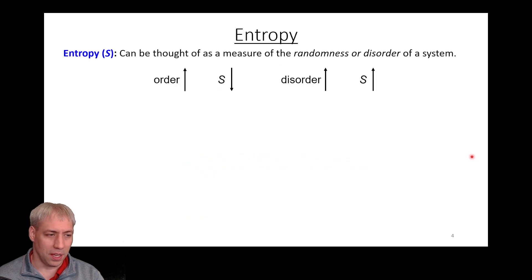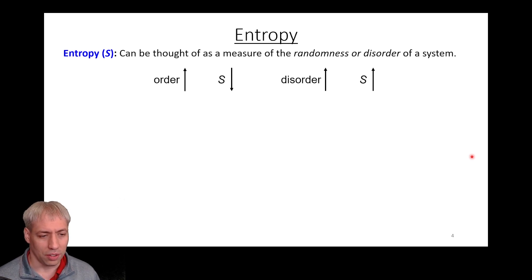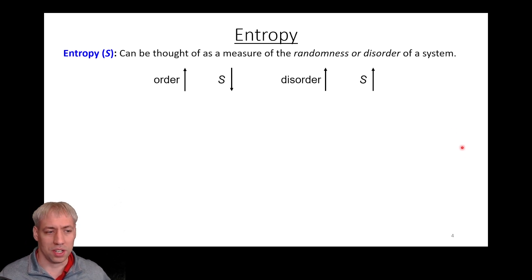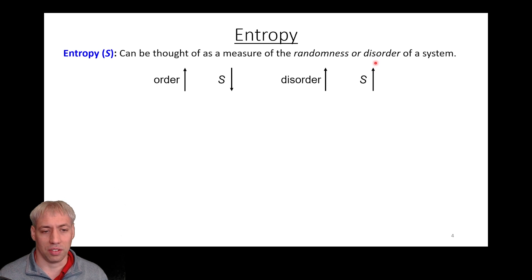In 16.2 we're going to talk about entropy. Entropy is a weird thing — there are many definitions to many different people. It's kind of hard to nail down a definition, but perhaps the easiest one to grasp intellectually is to think about it as a measure of the randomness or disorder in a system. Entropy S — which we denote as S in thermodynamics — the more ordered a system is, the less entropy it has, the smaller the S. The more disordered, the greater entropy the system has.